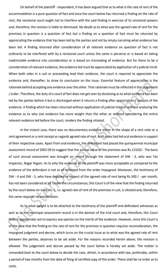As to why the evidence of the plaintiff was more acceptable as compared to the evidence of the defendant is not at all reflected from the impugned order. Moreover, the testimony of DW4 and DW5, who have deposed in respect of the agreed rate of rent being Rs. 500 per month, has not been considered at all. Under the circumstances, this court is of the view that the finding returned by the court below on issue number 1, i.e., the agreed rate of rent of the premises in suit, is vitiated and therefore requires reconsideration.